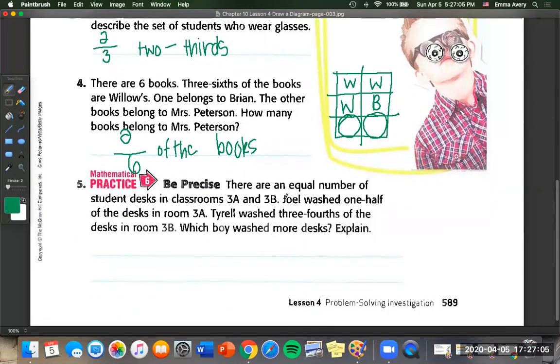So there are an equal number of student desks in classrooms 3A and 3B. Joel washed one half of the desks in room 3A. Tyrell washed three fourths of the desks in room 3B. Which boy washed more desks? So we have to draw two diagrams for this one. I want my boxes to be pretty much the same size because it tells us that there are the same amount of desks. And it tells us Joel washed one half. So we split this in half. And he washed this many.